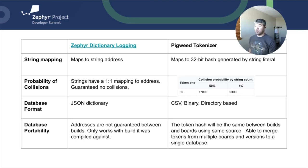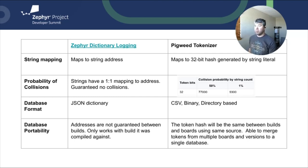Zephyr uses a JSON dictionary as the database format. Pigweed supports CSV, binary, and directory-based file formats. The usage of these different formats depends on how you want to manage your database, which I'll discuss in later slides. With database portability, the limitation with dictionary logging is that string addresses are not guaranteed between builds, so the database is only compatible with the build it was compiled against. This is where we prefer Pigweed's hash implementation. If the string content remains the same, the hash algorithm will generate the same token ID, so you'll be able to use the same database with any build.